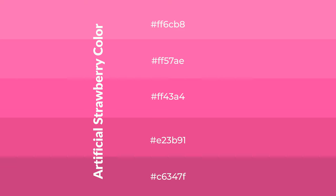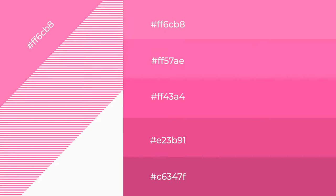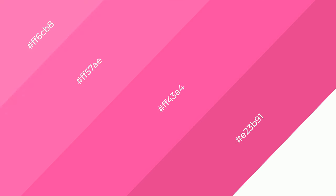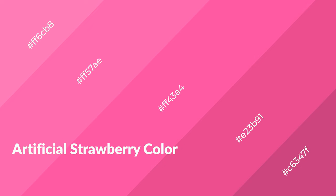To generate shades of a color, we add black to the color, and it is used in patterns, 3D effects, and layers. Shades create depth and drama. Artificial strawberry is a warm color and it emits cozier and active emotions.